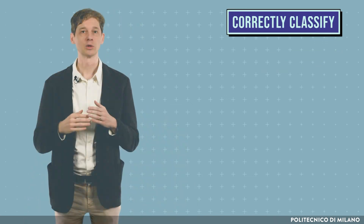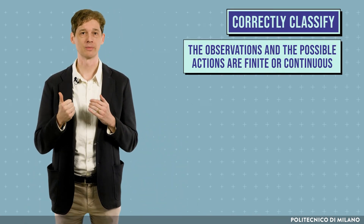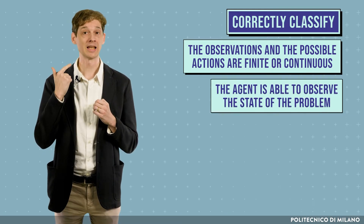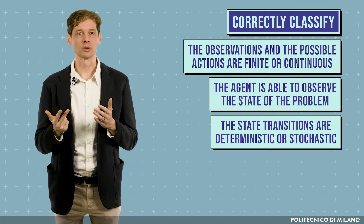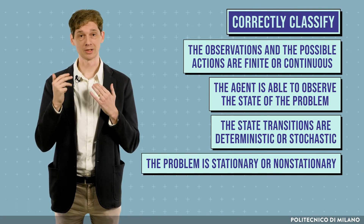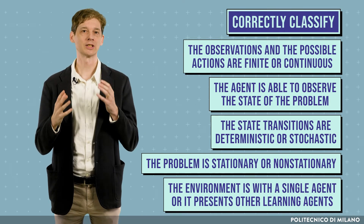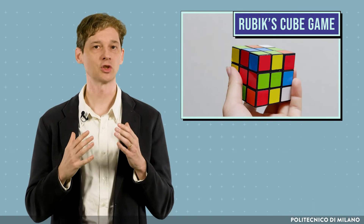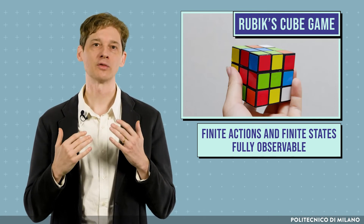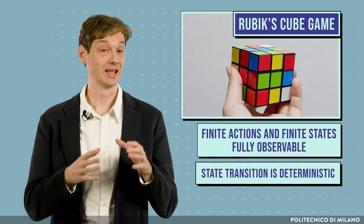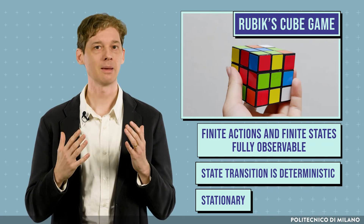In order to determine which reinforcement learning techniques must be considered, it is important to correctly classify the decision-making problem and formalize it. To classify this problem, we need to know whether observations and possible actions are finite or continuous, whether the agent can fully observe the state or we have only partial observation, whether state transitions are deterministic or stochastic, whether the problem is stationary or non-stationary, and whether the environment involves a single agent or multiple learning agents. For instance, the Rubik's cube is a sequential decision-making problem with finite actions and finite states, which are fully observable. The effect of actions on state transitions is deterministic, the game is stationary, and there is a single agent.